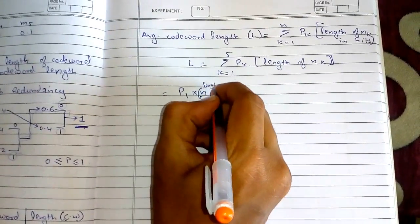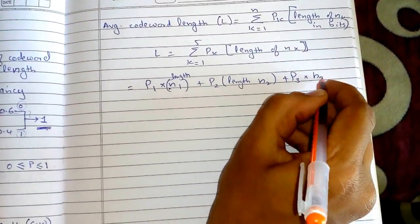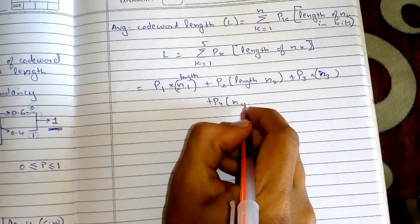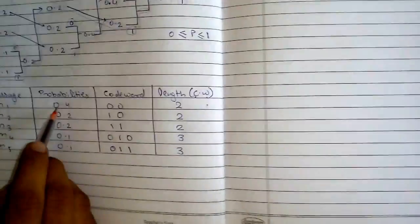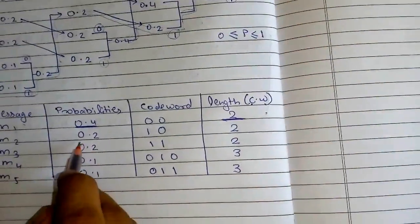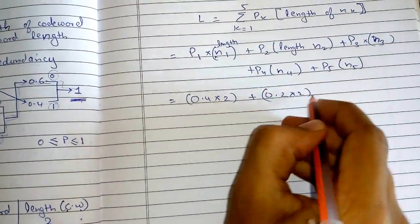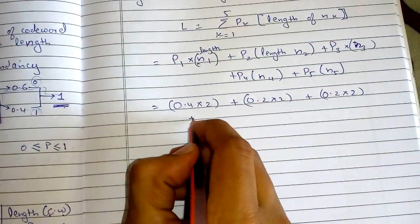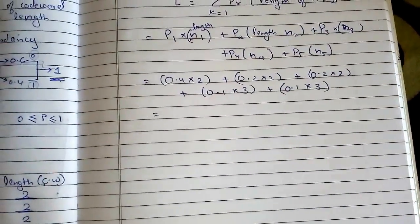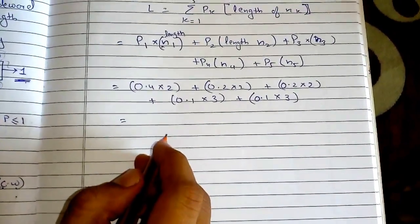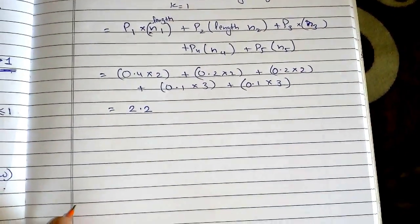Substituting values: 0.4 × 2 + 0.2 × 2 + 0.2 × 2 + 0.1 × 3 + 0.1 × 3. Adding all of these together gives N_avg = 2.2. This is the average codeword length.